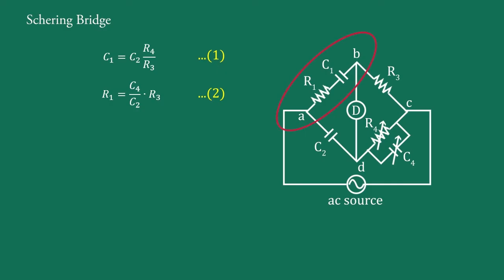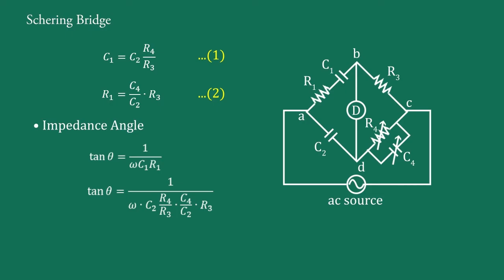Now we find the parameters of the bridge. In arm AB, resistance R1 and capacitance C1 are in series. The general formulas for RC series connection were explained in a previous video. The first parameter is the impedance angle θ: tan θ = 1/(ωC1·R1). Substituting the values of C1 and R1 from Equations 1 and 2, we get tan θ = 1/(ω · (C2·R4/R3) · (C4·R3/C2)). The C2 and R3 terms cancel, giving tan θ = 1/(ωC4·R4), so θ = tan⁻¹(1/(ωC4·R4)).